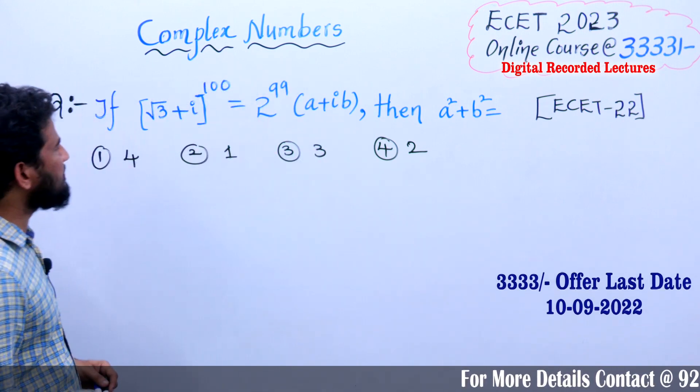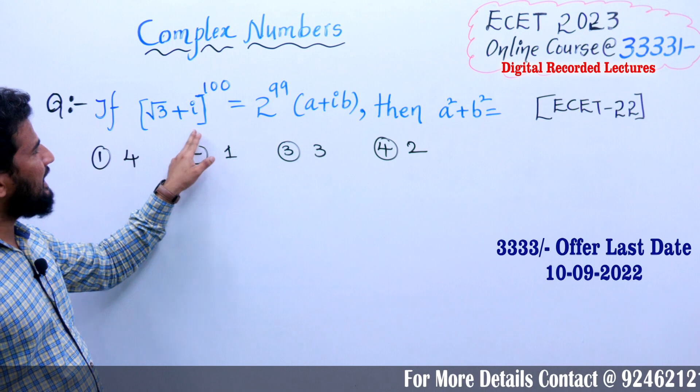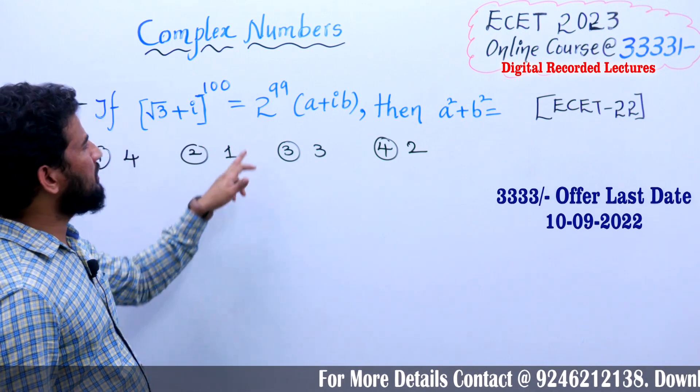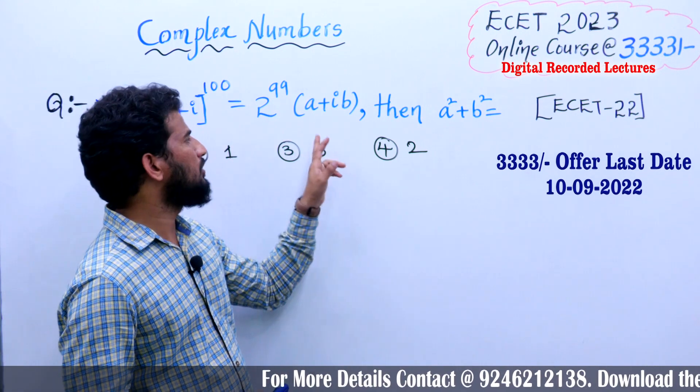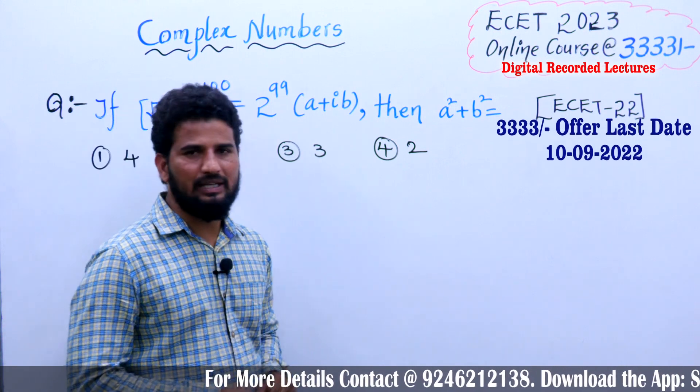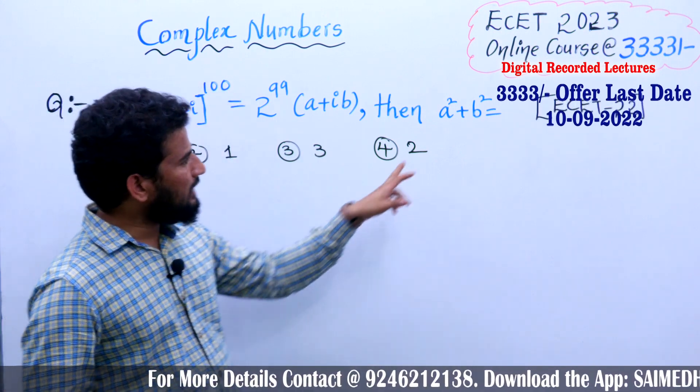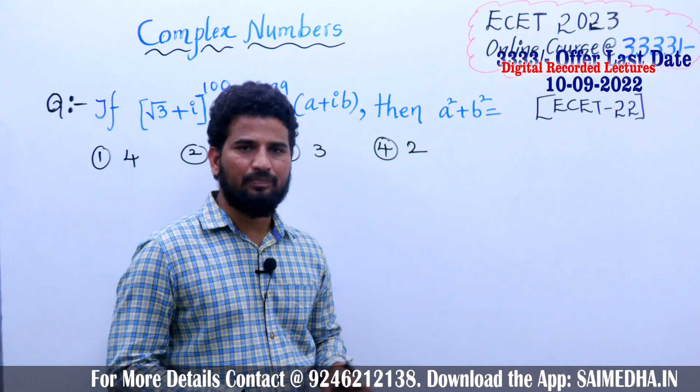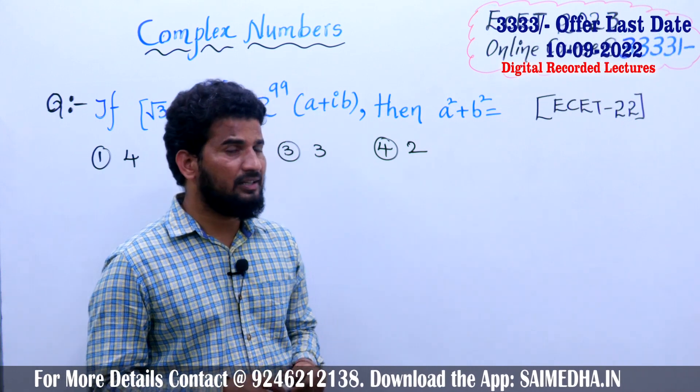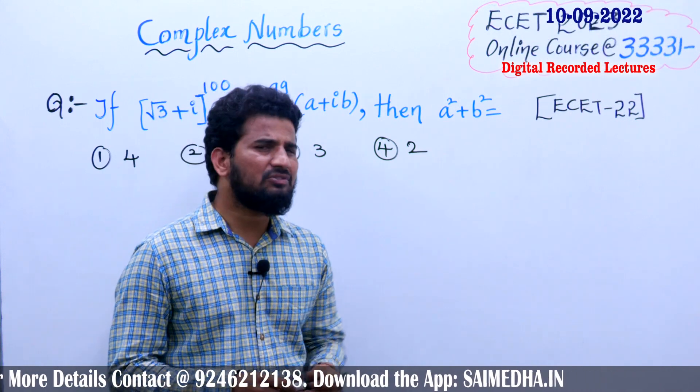The question reads as: if (√3 + i)^100 = 2^99(a + ib), then we need to calculate a² + b². We should calculate the value of a² + b².